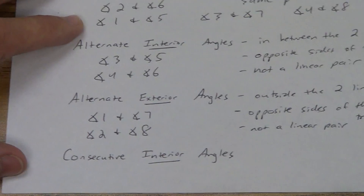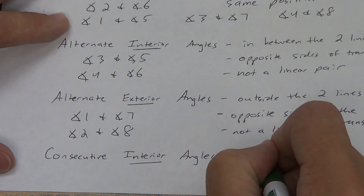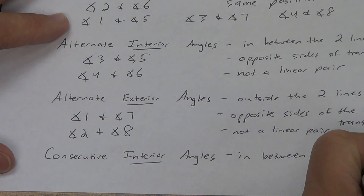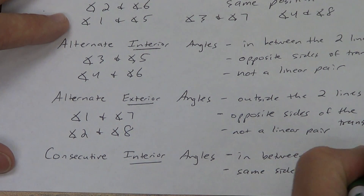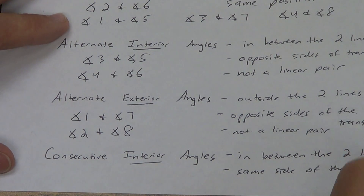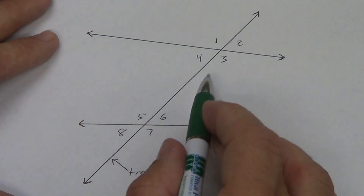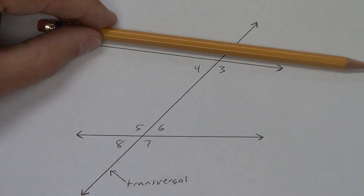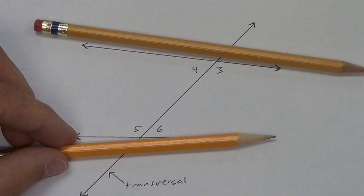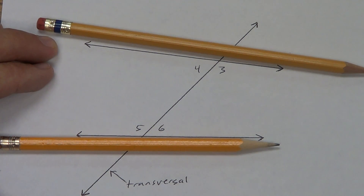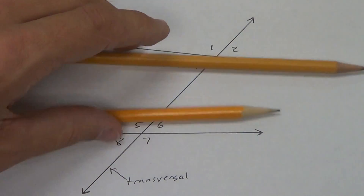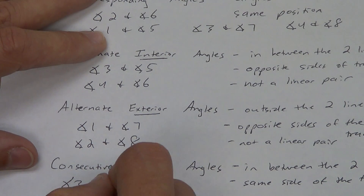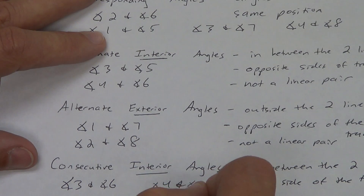Consecutive interior angles — let's go back to interior, so in between the two lines. But here they're on the same side of the transversal. So I can't use one and two, or seven and eight — they're outside. Which of the interior angles are on the same side of the transversal? Three and six are on the same side, and four and five are also on the same side.